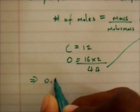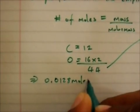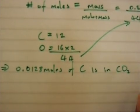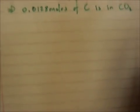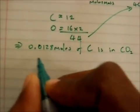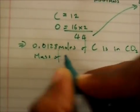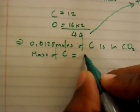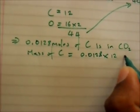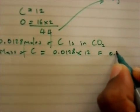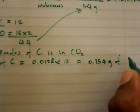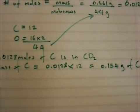So 0.0128 moles of carbon is present in the CO₂. The next thing we calculate is the mass of carbon in the carbon dioxide. Mass of carbon equals 0.0128 times 12, which equals 0.154 grams of carbon.